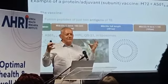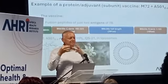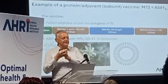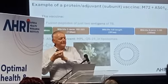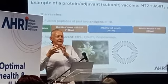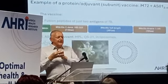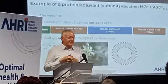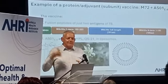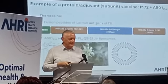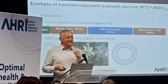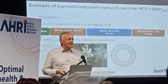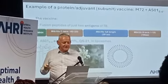So then you formulate this vaccine, you put it in a syringe, and you give it — most vaccines, by far the majority, are given by injection. So what happens then if you give it as an injection?